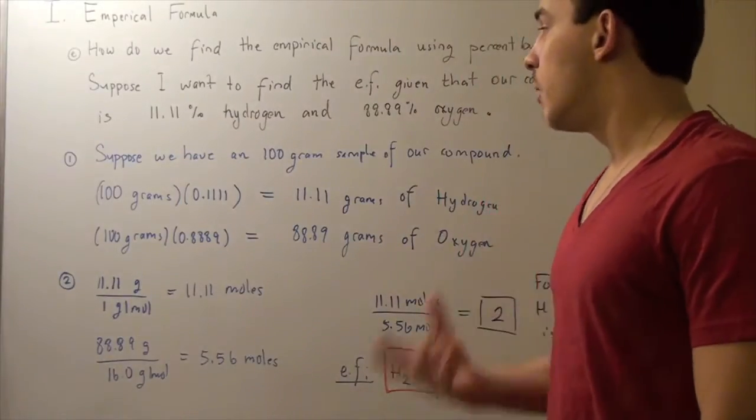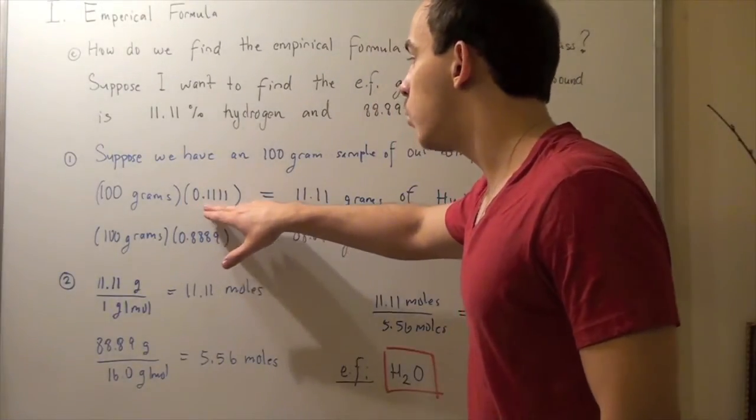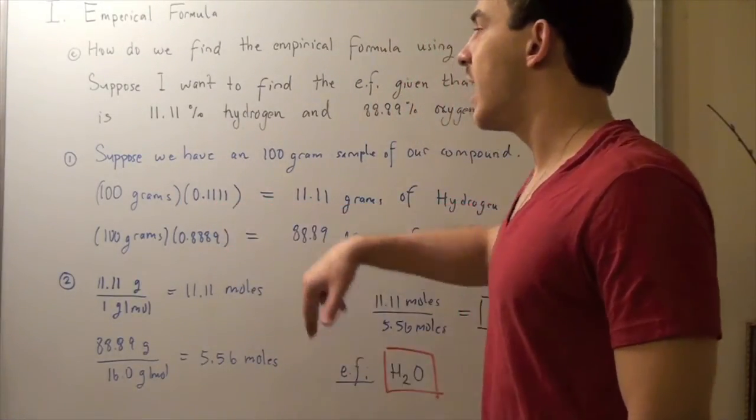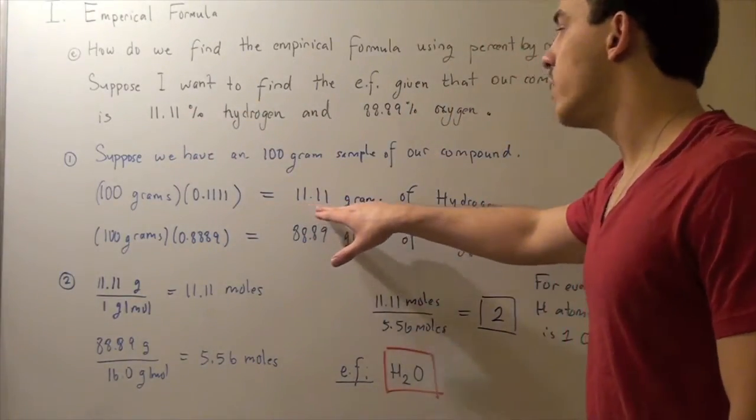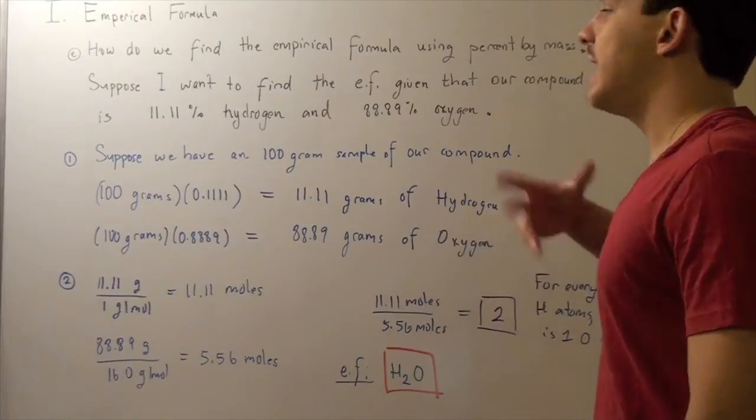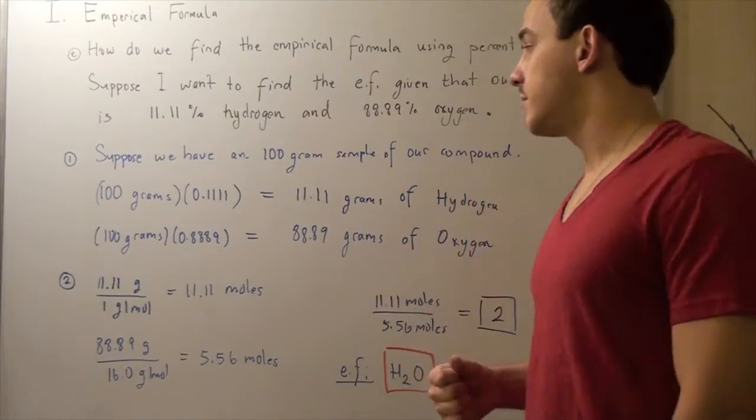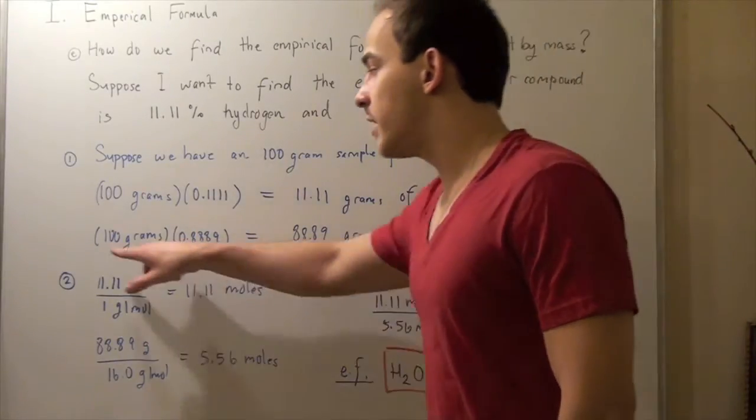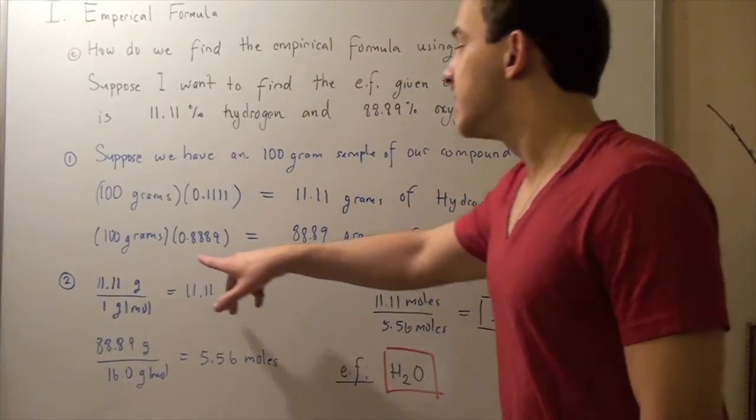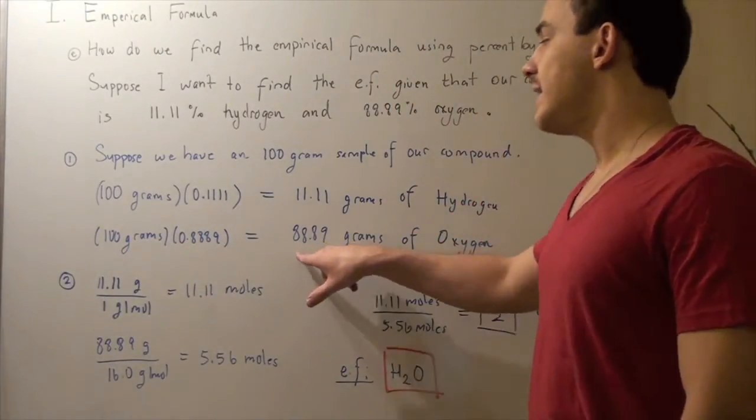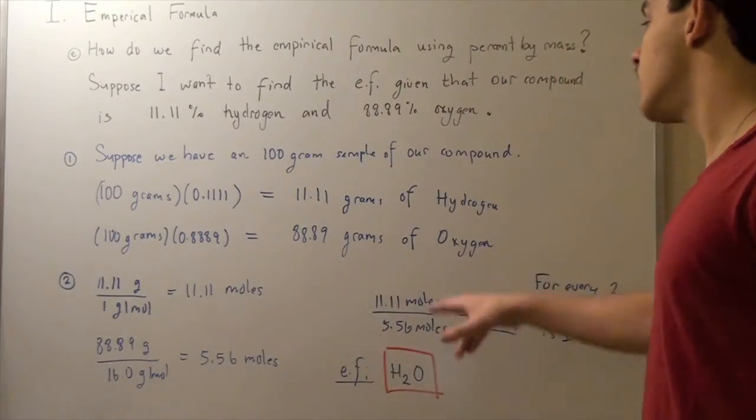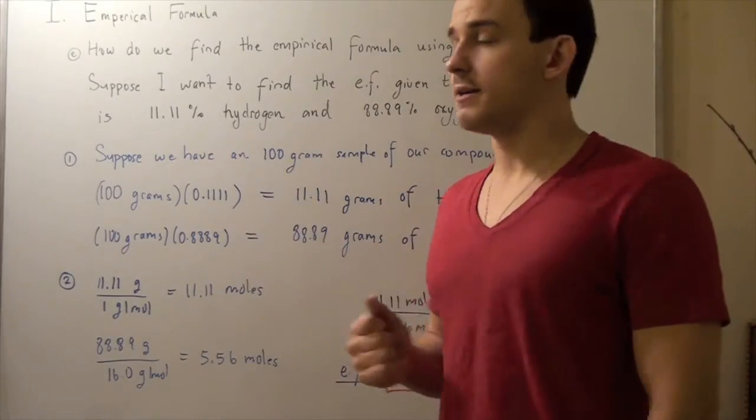So, 100 grams of my compound multiplied by 0.1111, which I got this guy divided by 100, equals 11.11 grams of H in my 100 grams of compound. Now likewise, I multiply 100 grams times 0.8889. Now this gives me 88.89 grams of oxygen in my 100 grams of compound.